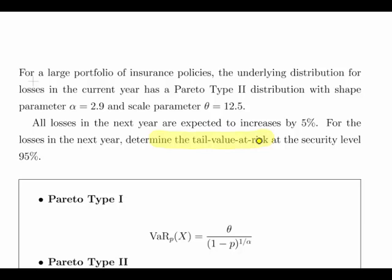They have a financial mathematics application. For a large portfolio of insurance policies, the underlying distribution for losses in the current year has a Pareto Type II distribution with shape parameter alpha equals 2.9 and scale parameter theta equals 12.5.